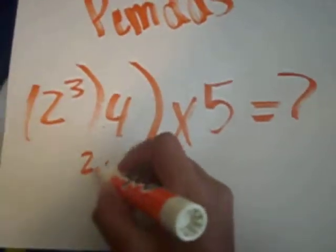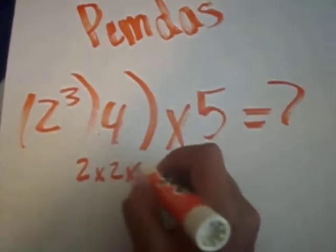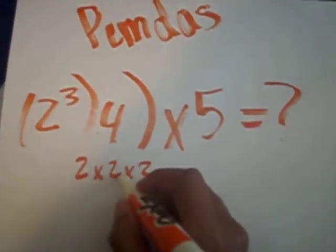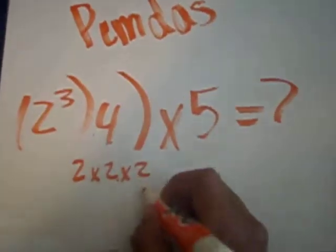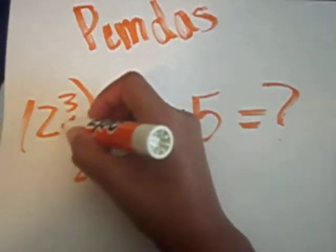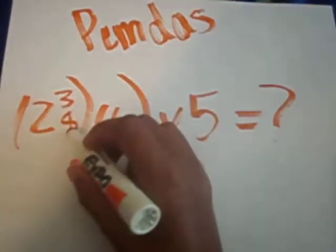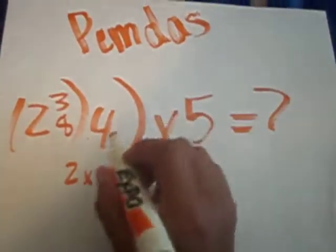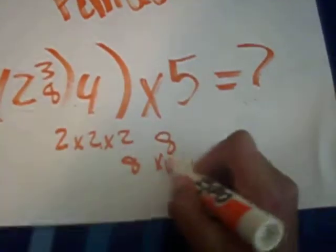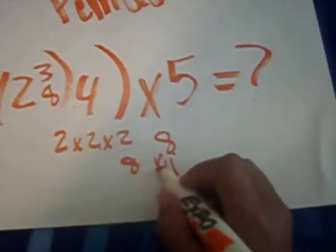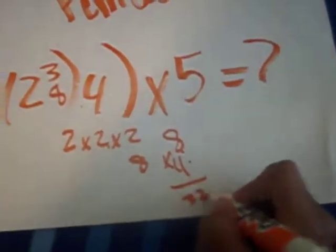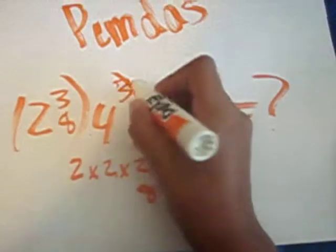2 times 2 times 2, that's 4, times 2, equals 8. So this is 8, 8, times 4. 8 times 4 equals 8, 16, 24, and 32. So this is 32, 32. So this is 32 now.